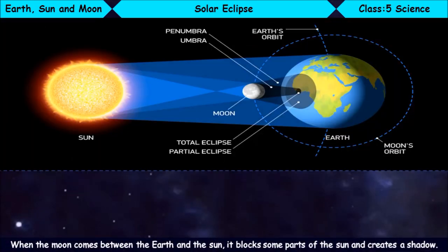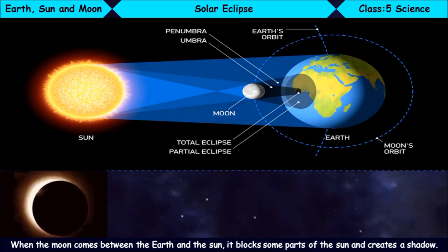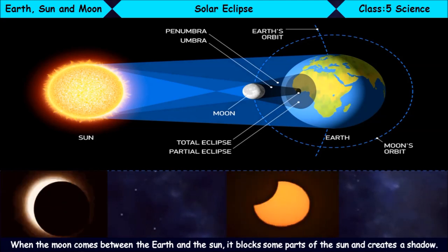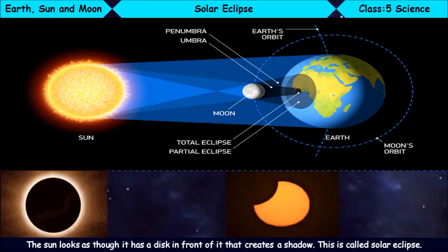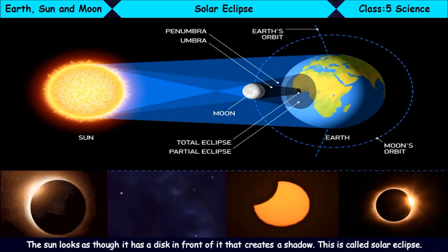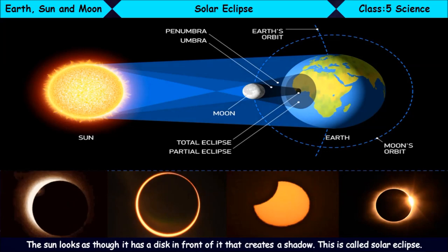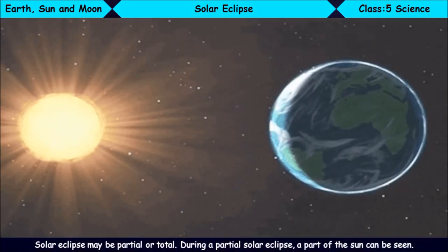Solar Eclipse. When the Moon comes between the Earth and the Sun, it blocks some parts of the Sun and creates a shadow. The Sun looks as though it has a disk in front of it that creates a shadow. This is called a Solar Eclipse. The Solar Eclipse may be partial or total.